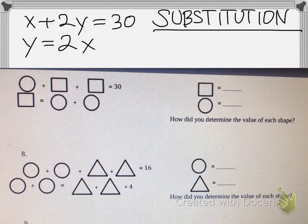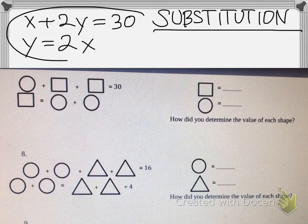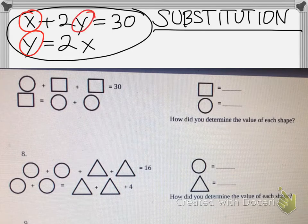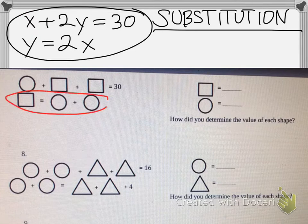Basically there's y equals 2x, but with pictures. Check out how easy this problem becomes. We're trying to solve for x and for y, two variables, not easy. So here we go. In the second equation it tells you that a square is equal to two circles.